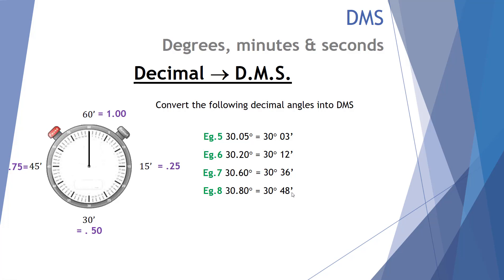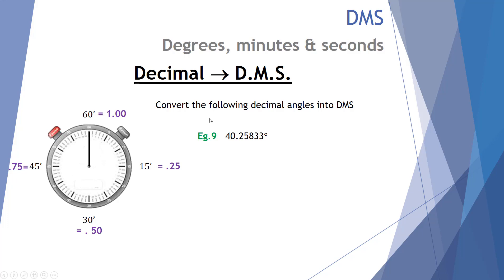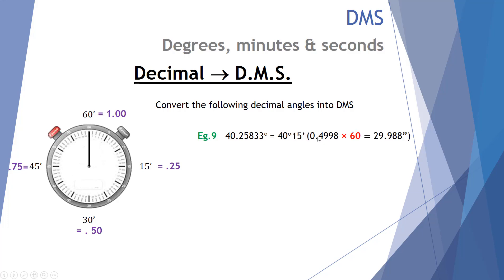Finally, let's look at some more challenging examples. How about something like 40.25833 degrees? That's 40 degrees with 0.25833 left over. Multiply that by 60 and we get 15.4998. So we have 40 degrees and 15.4998 minutes — still not a nice even number. So we take that 0.4998 and multiply it by 60 to work out the fraction of a minute in seconds. It comes out that 40.25833 degrees is equivalent to 40 degrees, 15 minutes and 30 seconds.